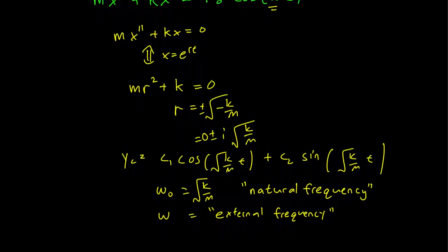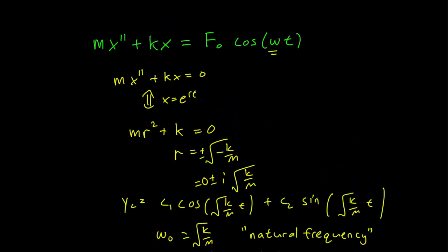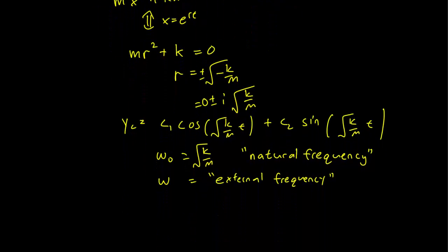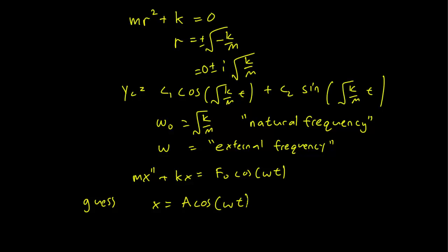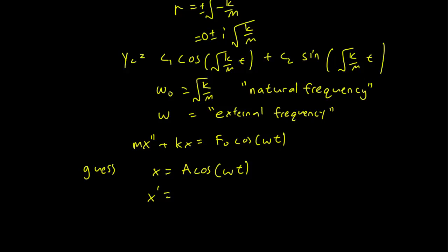So the system has a natural frequency and also has a vibration acting on it. Let's try to solve for the particular solution using the undetermined coefficients technique. We have mx'' plus kx equals F0 cosine(omega·t). We guess that x equals A cosine(omega·t). Typically for trigonometric functions you'd add a B sine term, but since there's no x' term, the sine never appears, so we don't have to include it.